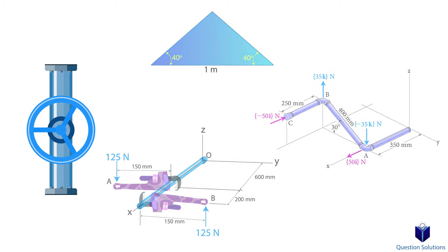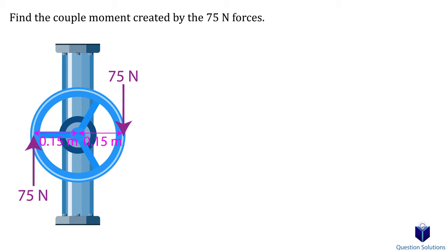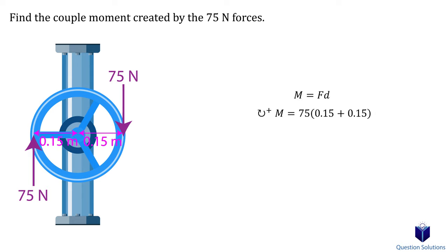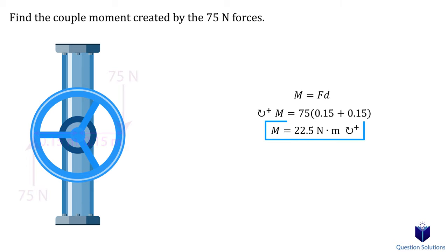Let's take a look at this question where we need to find the couple moment produced by two forces. The distance between the two forces is 0.3 meters, so all we need to do is multiply that by the force. We will assume clockwise movement to be positive, and that's our answer.